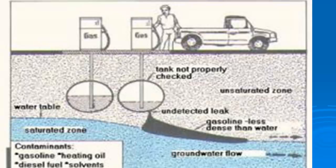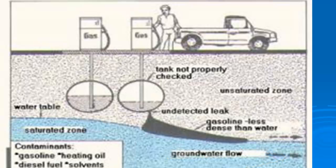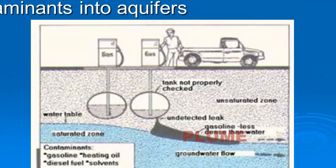Because the ground is porous and permeable, that material then enters into our groundwater source. Now depending upon its density, if it's less dense it's going to float on top of the water table. If it's more dense it will actually seep into the water table and become part of that moving water as it percolates through the ground. The moving contaminant that moves along with our pollutant is called a contaminant plume.